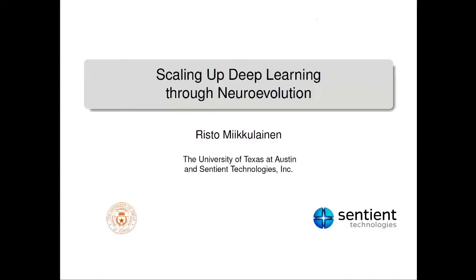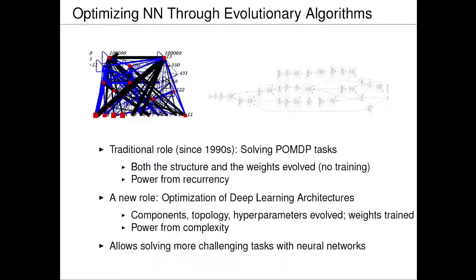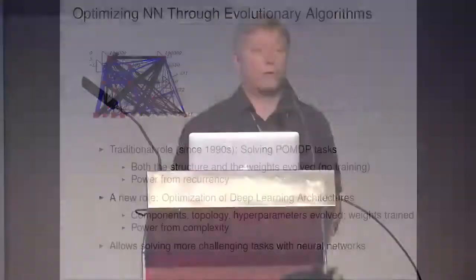I'm going to be talking about how we can scale up deep learning using a technique from evolutionary computation — the idea that we optimize the neural network using evolutionary algorithms. There are two parts of this talk and two parts of this whole field of evolution optimization of neural networks.